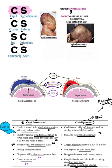I hope this makes the topic of caput succedaneum and cephalohematoma very easy. Now revise with me once: caput succedaneum - CS it crosses the suture, SC it is subcutaneous, and CS it is more commonly seen.